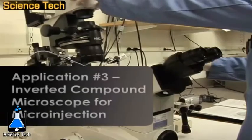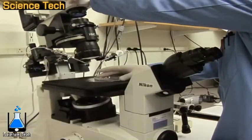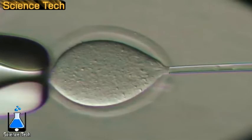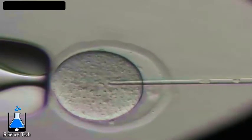Here you can see an inverted compound microscope which has an objective below the stage being prepared for a microinjection technique. This procedure, known as somatic cell nuclear transfer, is an important method for generating transgenic animals and creating clones.